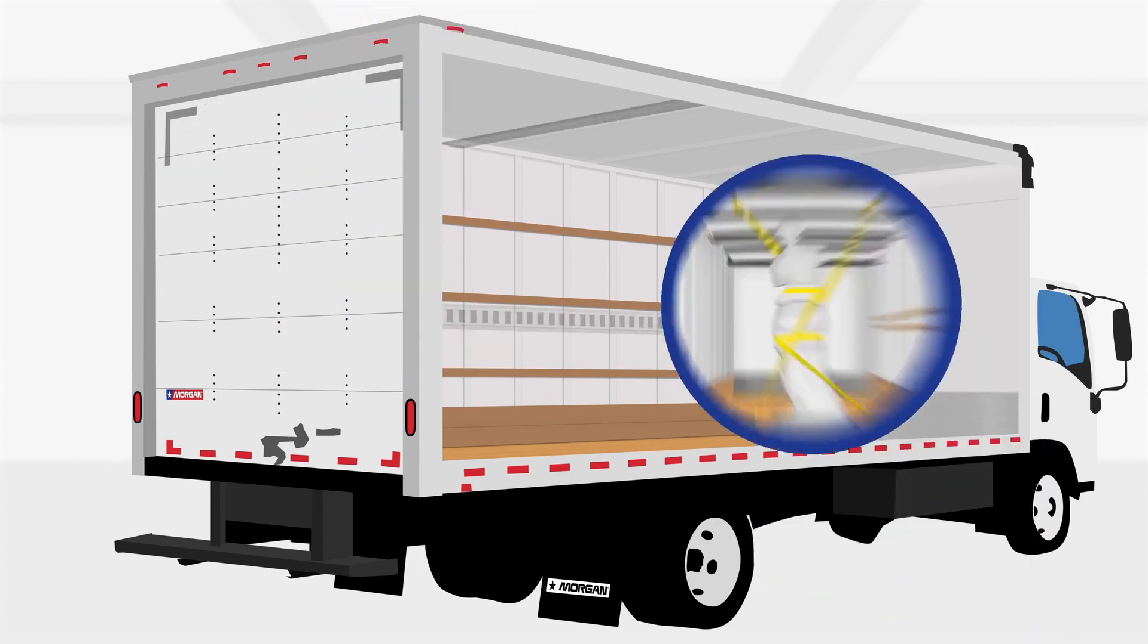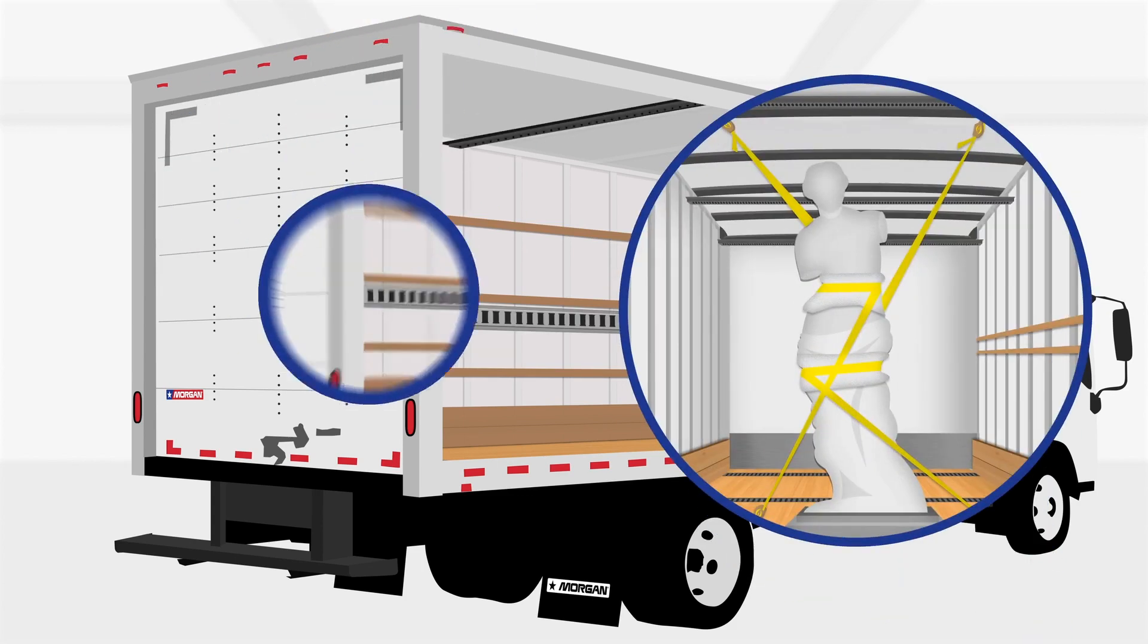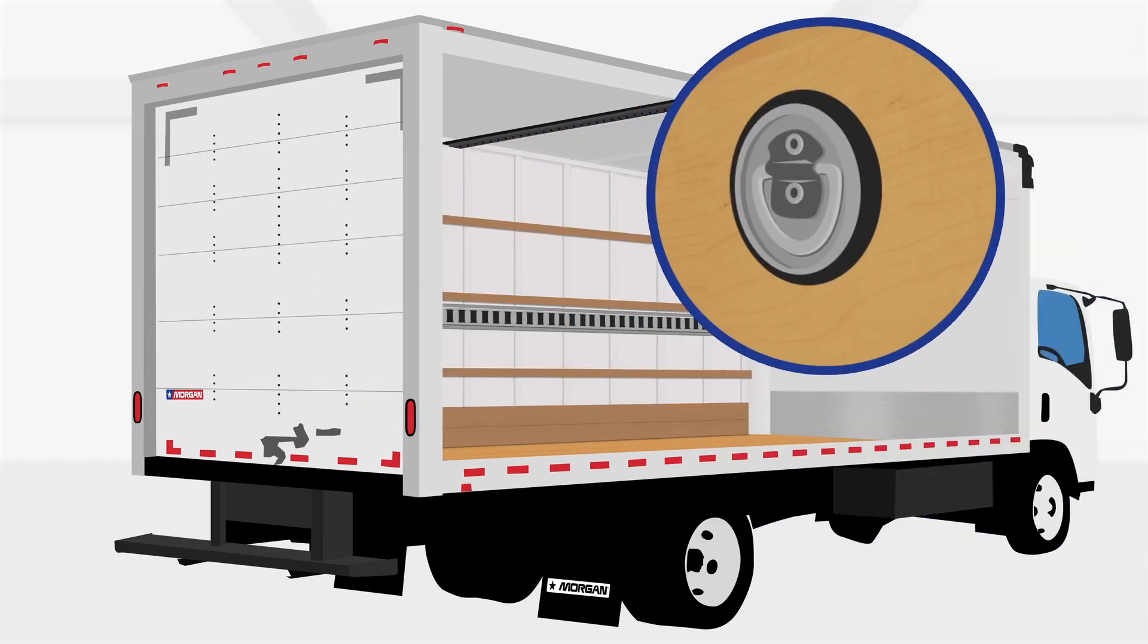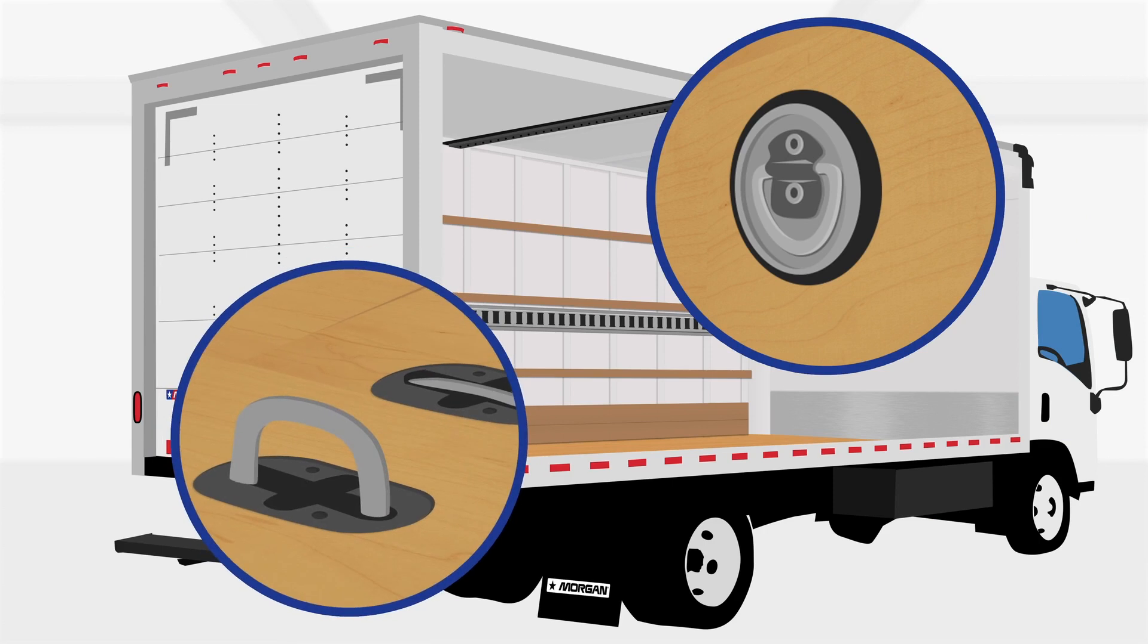And to secure what you're hauling, you can order E or F tracks for flexibility, surface mounted tie rings or recessed tie rings if you prefer a smooth, unobstructed interior when your tie downs are not in use.